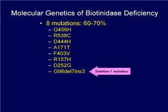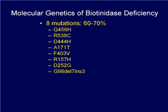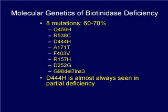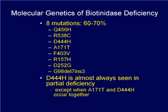We will refer to this as the deletion-7 mutation. Individuals with biotinidase deficiency will have two of these mutations, usually one on each of their chromosome 3s. We will also illustrate how the D444H mutation is almost always associated with partial deficiency, except for the rare cases where it occurs on the same chromosome as the A171T mutation.